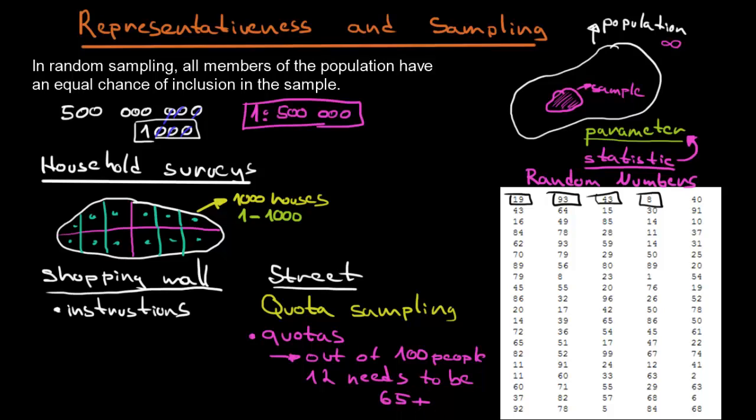But what is important about quota sampling is that you need to have some prior background information. And this can be really the statistics as I told you. You know that there are 12% of elder people in the population. So if your sample should be really representative, 12% in your statistics or in your data should be at the age of 65+.